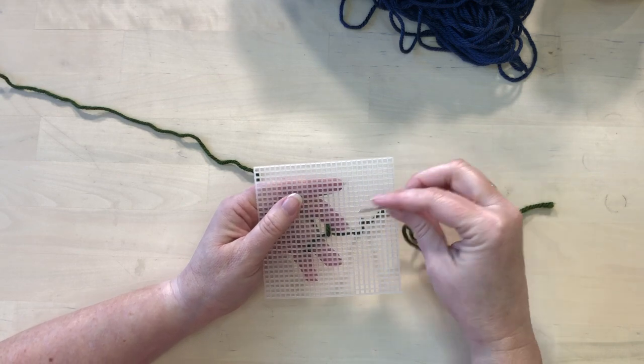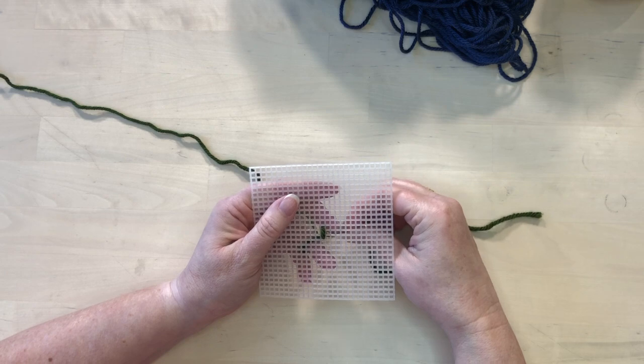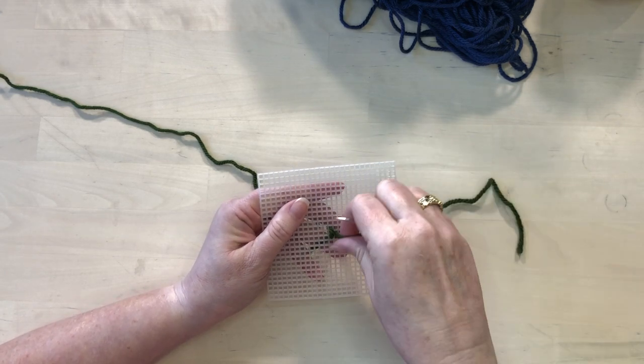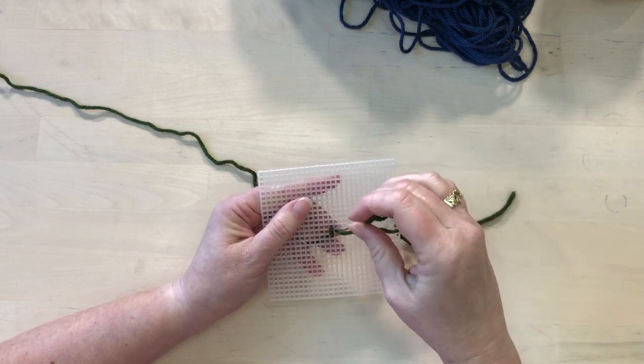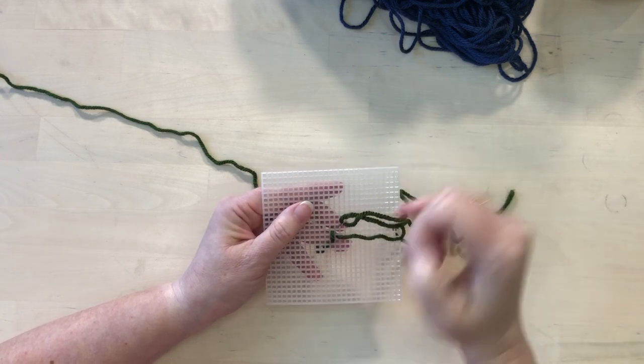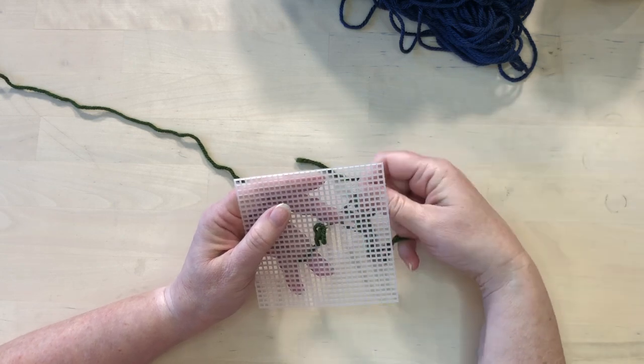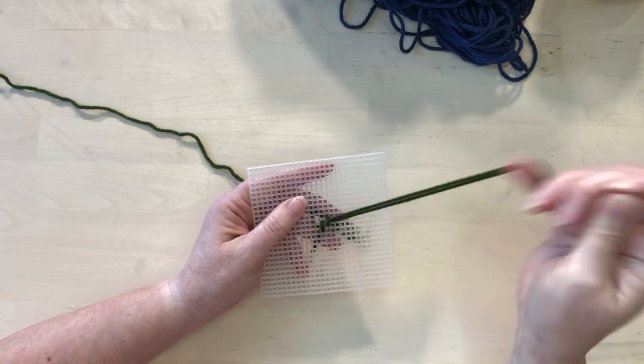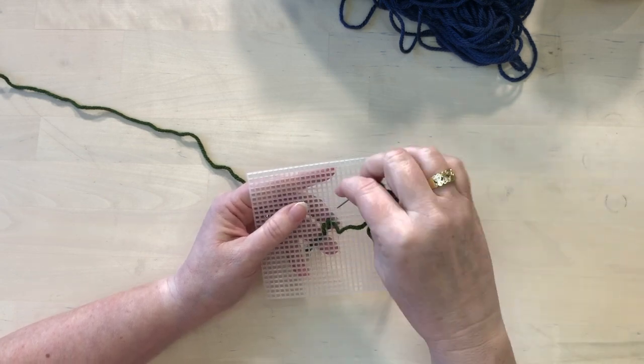But now from here I'm going to make another stitch right beside it, also over one hole, but I'm going to be going up one. So you can see I'm going up a step. And then I'll go over another, up another step.